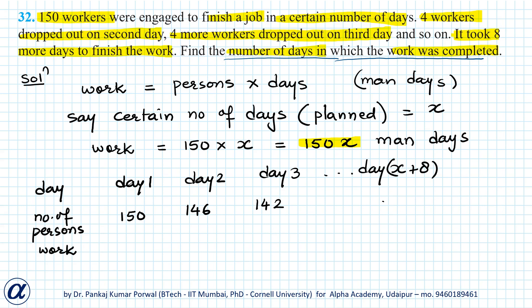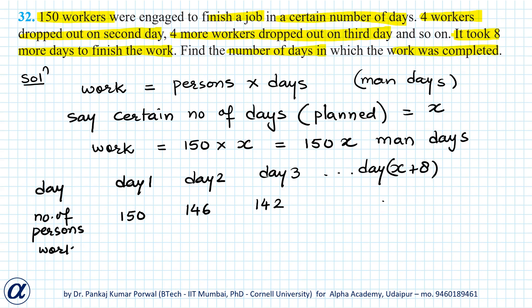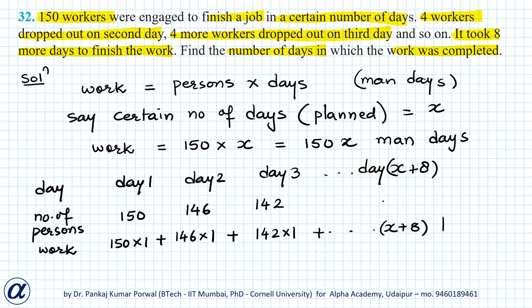To calculate work in this situation, we have to find the amount of work done on each day individually and then add the work on all the days to find the total work done. On day one, 150 workers worked, so work done is 150 × 1. On day two, 146 workers worked: 146 × 1. On day three, 142 × 1, and so on. To find total work, I add all these values. Because this lasted for x plus eight days, there will be x plus eight terms in this series.